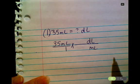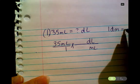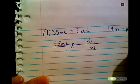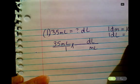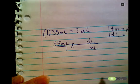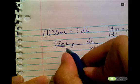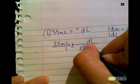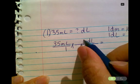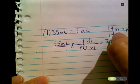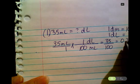If I look at my metric chart that we just went over, I see that one decimeter is equal to 100 millimeters. We wrote that before, so that means that one deciliter is equal to 100 milliliters also. So 100 milliliters to one deciliter means that I'm doing 35 times one divided by 100. So in other words, 35 over 100, which is 0.35 deciliters.